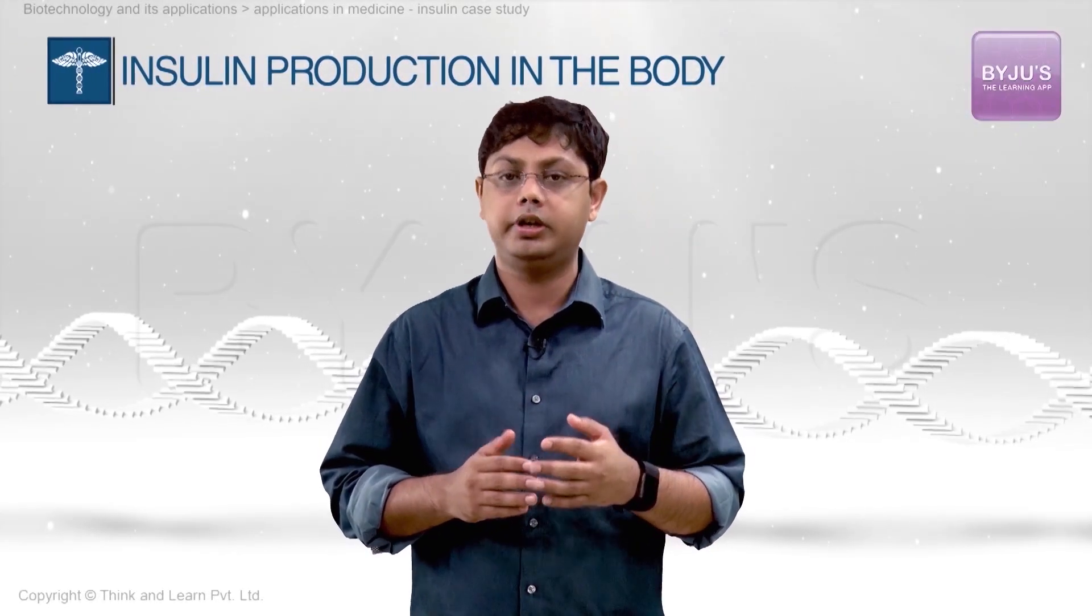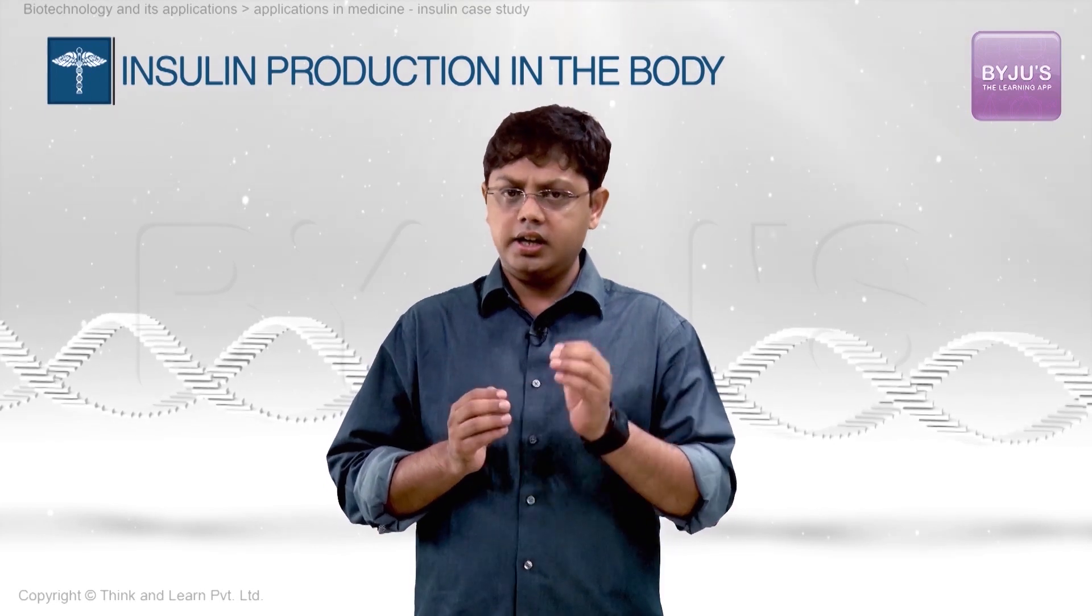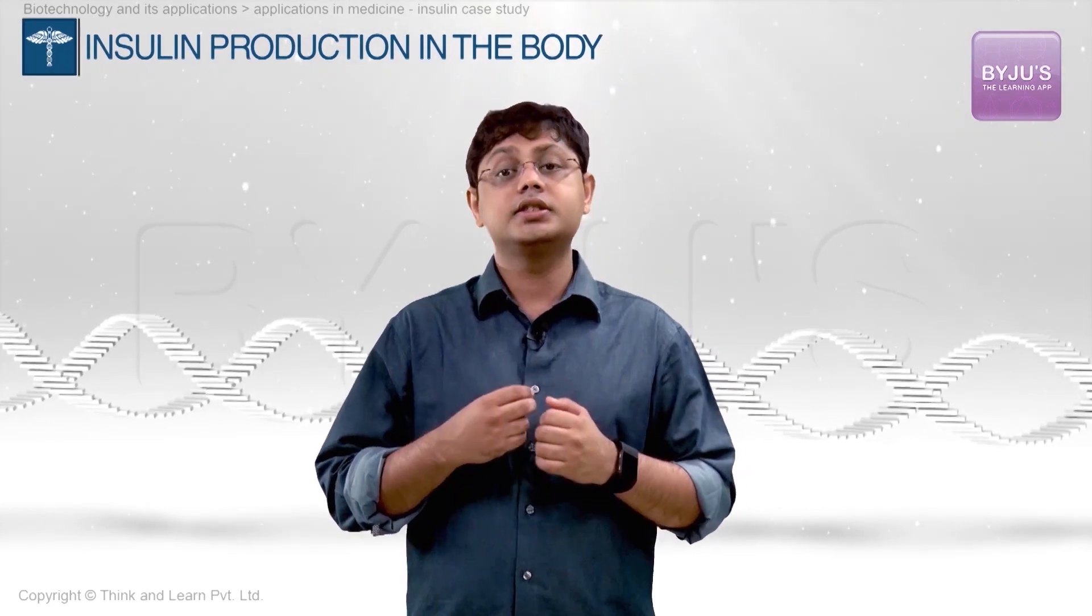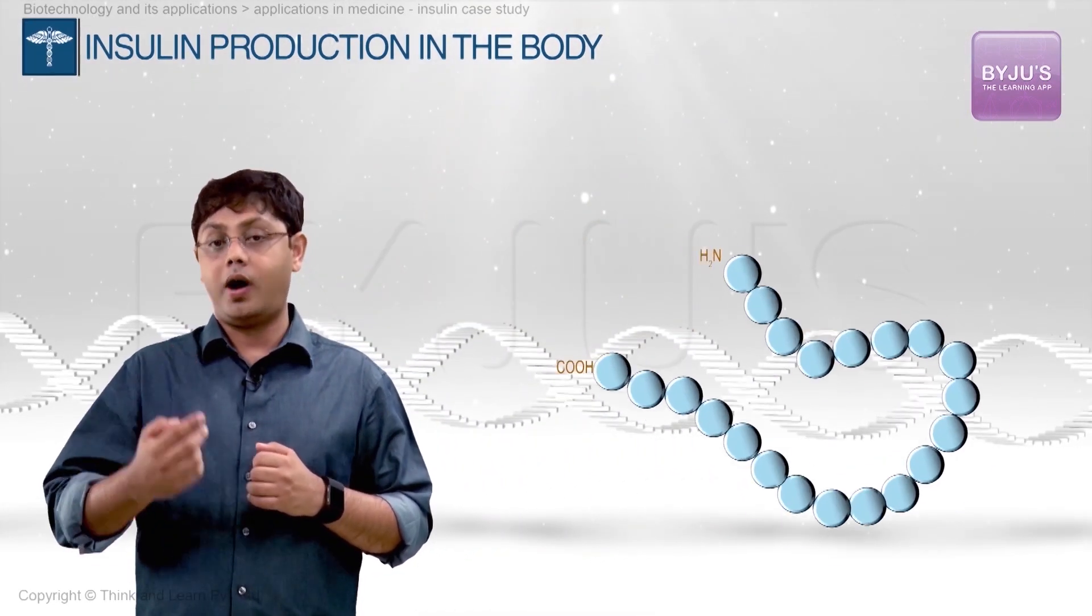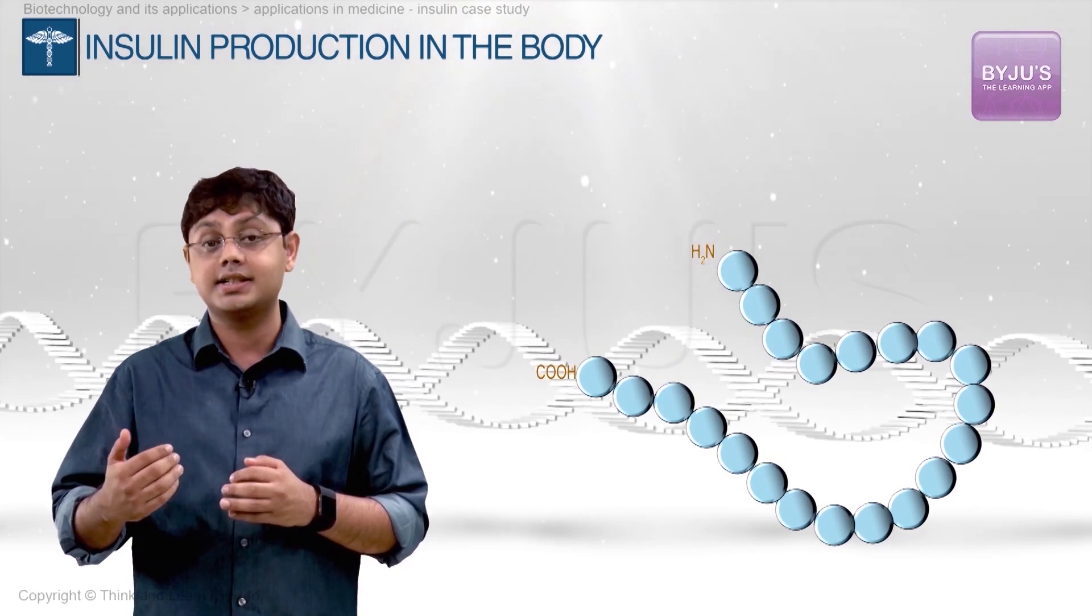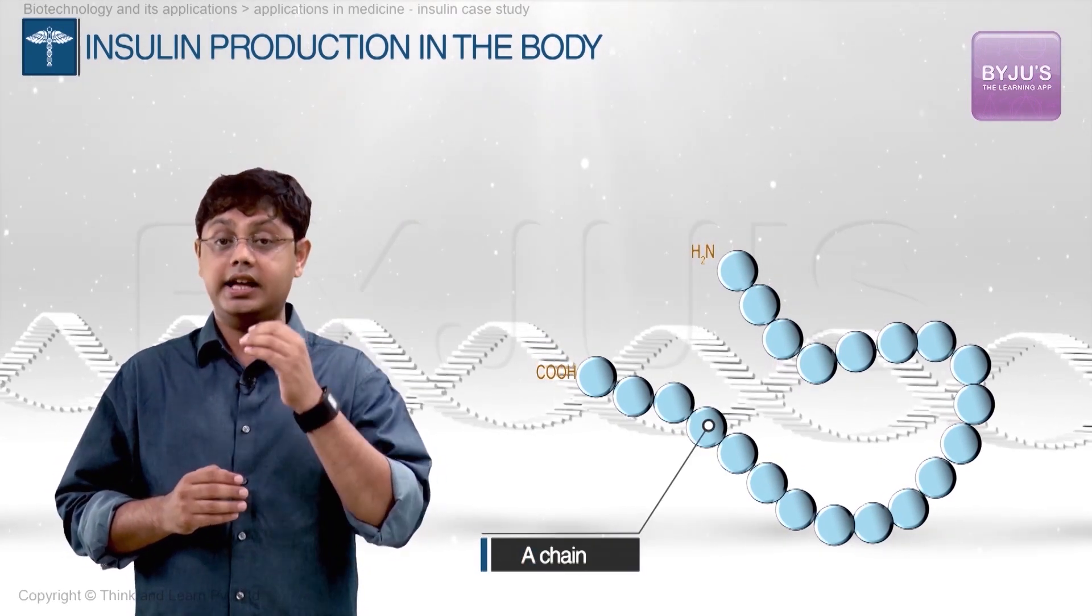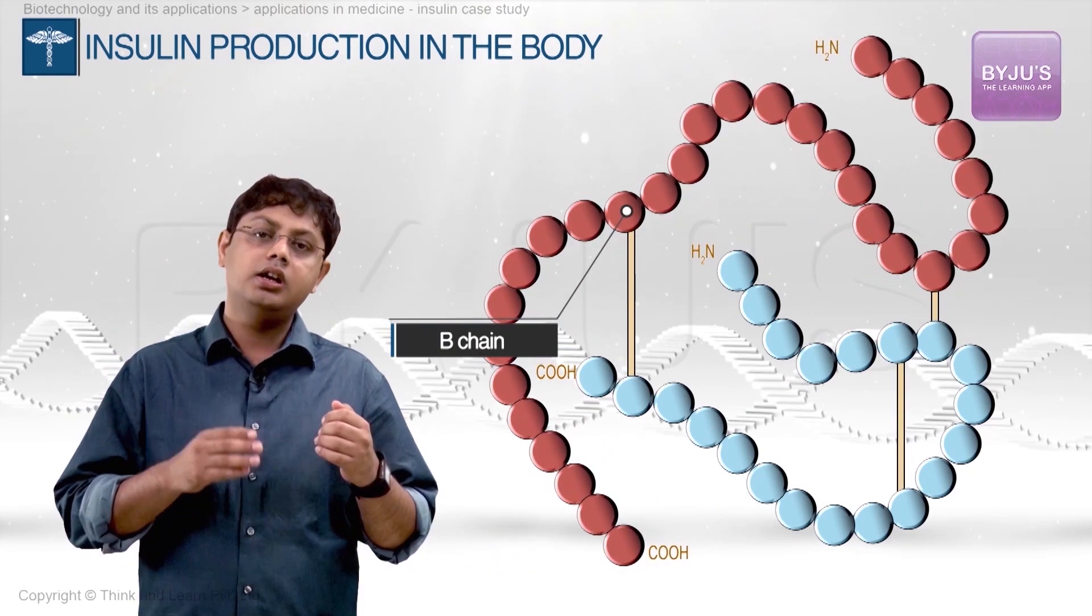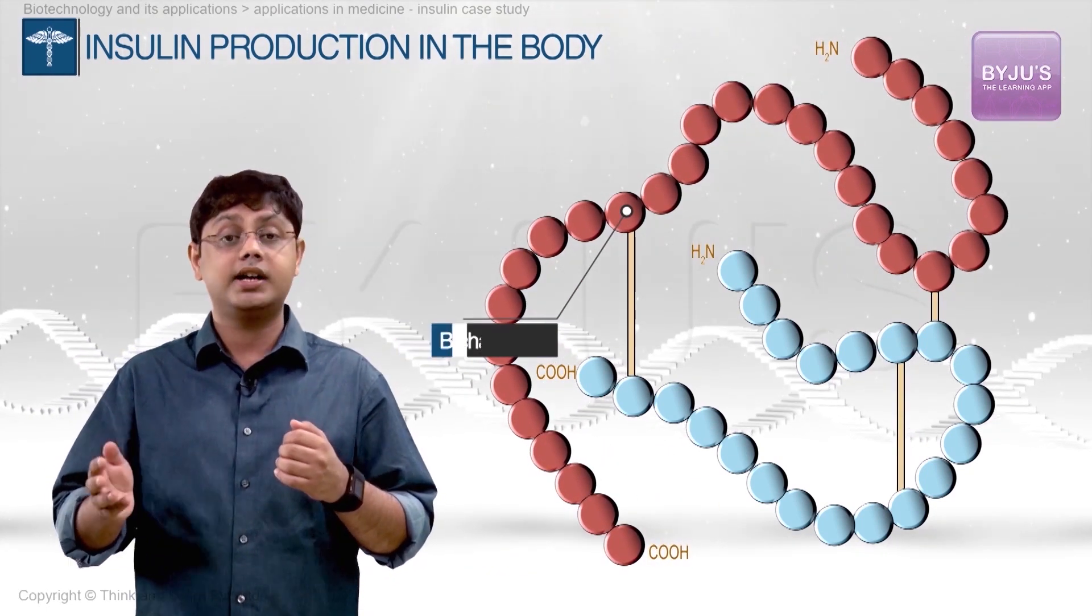Let us first look at how insulin is produced in a normal human being. The hormone insulin is a small molecule consisting of two protein chains. One made up of 21 amino acids and is denoted as the A chain and the other called the B chain consisting of 30 amino acids.